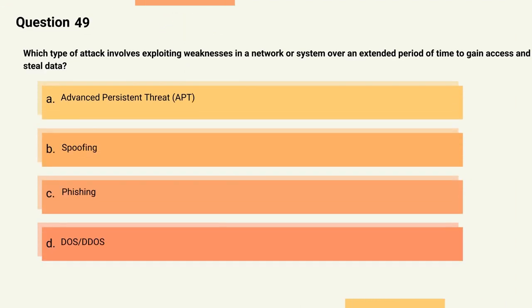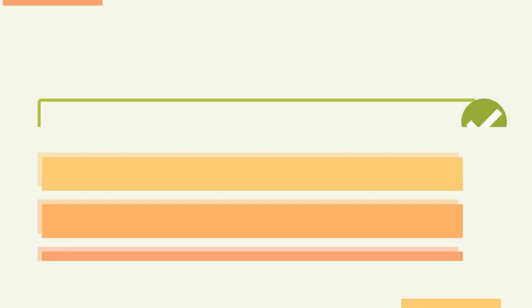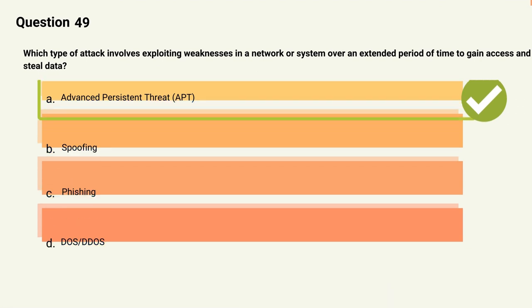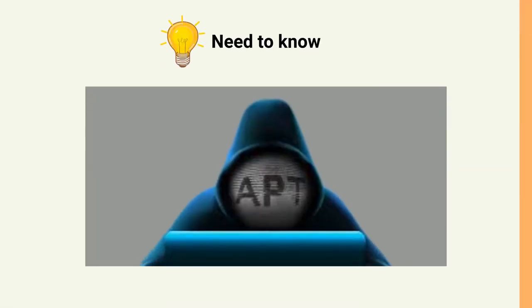Question 49: Which type of attack involves exploiting weaknesses in a network or system over an extended period of time to gain access and steal data? Options: A) Advanced Persistent Threat (APT), B) Spoofing, C) Phishing, D) DoS. The correct answer is Option A, APT. Explanation: APT attacks involve a slow and deliberate approach to infiltrating a system, often using multiple attack vectors and exploiting vulnerabilities over an extended period of time.